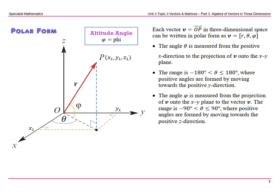This video looks at polar form in three-dimensional space. Each vector v represented by OP can be written in polar form as v equals r, theta, and phi.